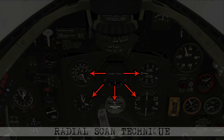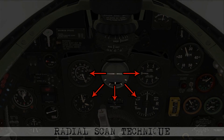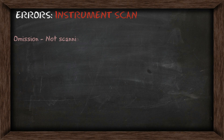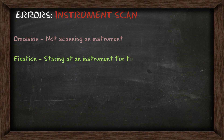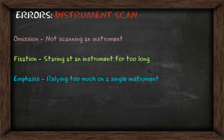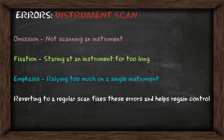At some point though, your scan may break down and you may lose your altitude, heading, or airspeed. This is due to an instrument scan error. You may not be scanning a particular instrument when you need to, you might be staring at an instrument for too long, or you could be relying too much on a single instrument. If you notice this is happening, revert to a regular scan and this will help you fix these errors and help regain control of your aircraft.